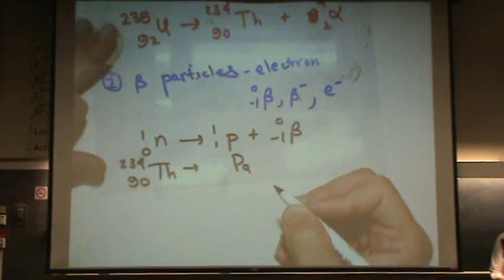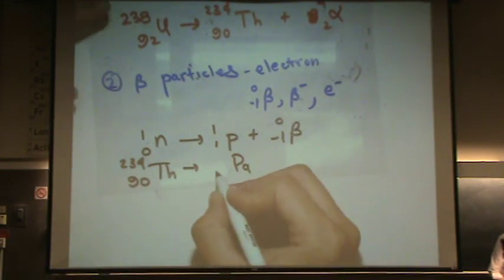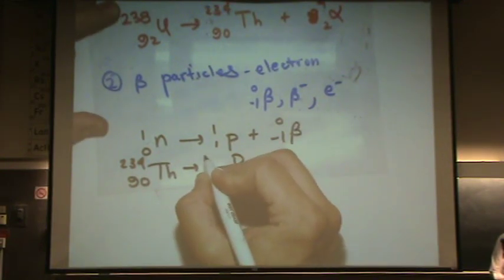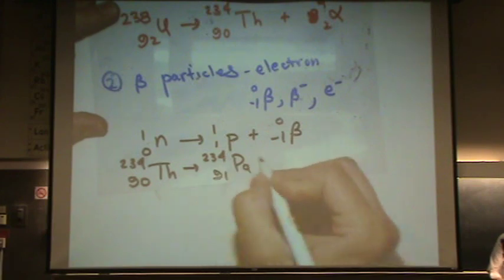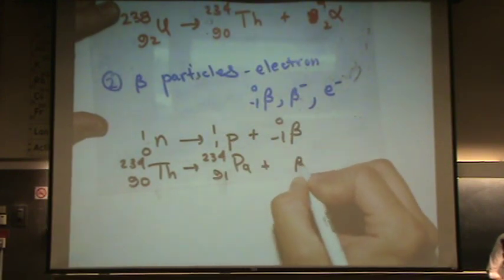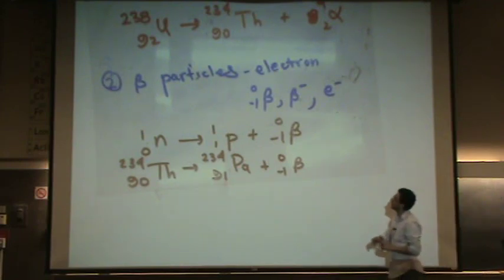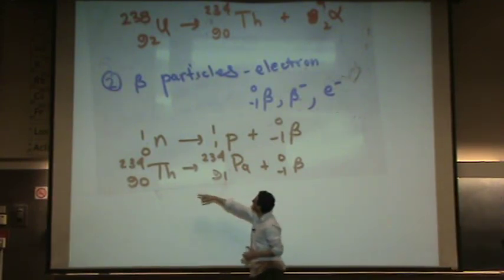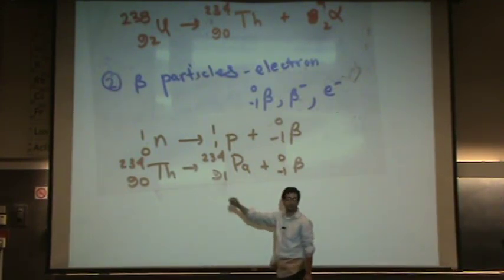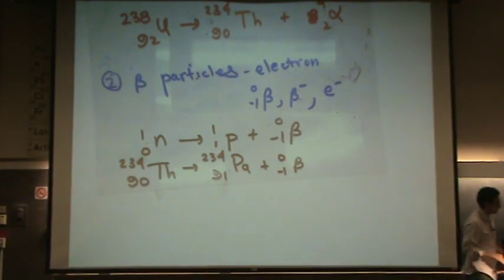I forgot what PA is. I don't know if that's protactinium or something like that. This will go to 91 and 234 plus a beta particle. So notice again, 91 minus one equals 90. And 234 plus zero equals 234. So the top and the bottom all would line up.